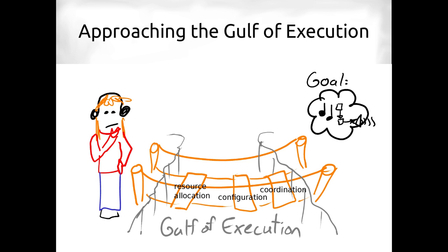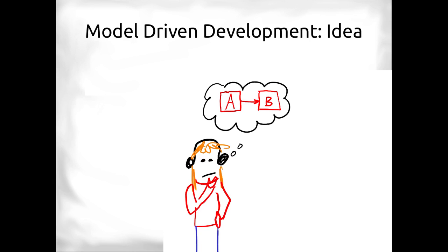A computer musician who wants to use the cloud approaches a gulf of execution. This means there's something in their way — a bunch of things they have to do before they can get what they want, their goal. There's resource allocation, there's configuration and coordination — these are all skills you need to pick up from DevOps.